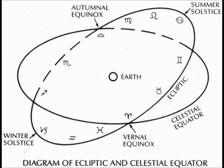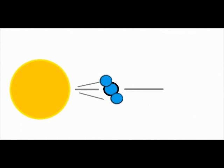However, all is not perfectly balanced in that plane of motion called the ecliptic. As a planet moves around the sun in the plane called the ecliptic, that planet will experience a little bit of wobble. It's not perfectly balanced within that plane.